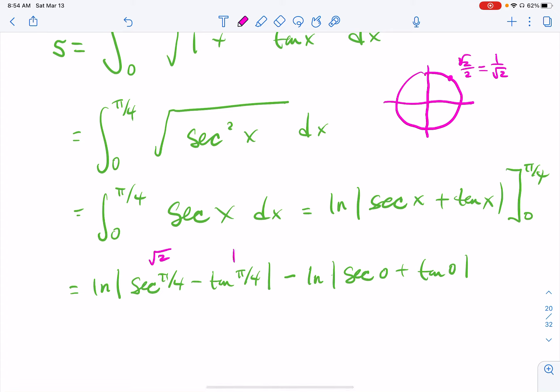And then of course, tangent is just one at pi over four. The secant of zero is the reciprocal of one, otherwise known as one. And the tangent of zero is zero.